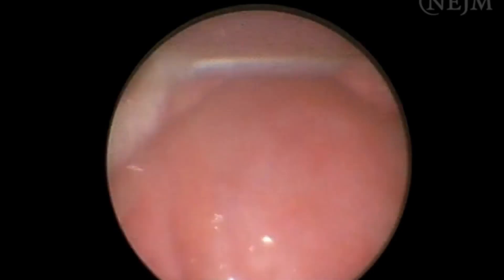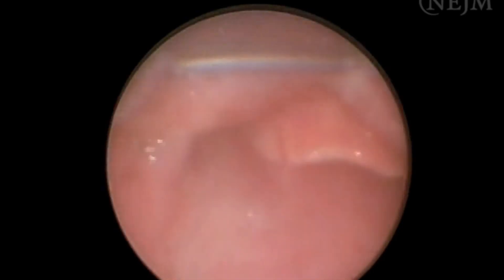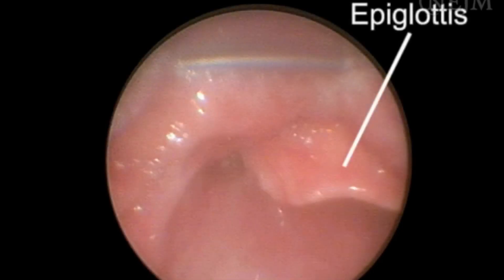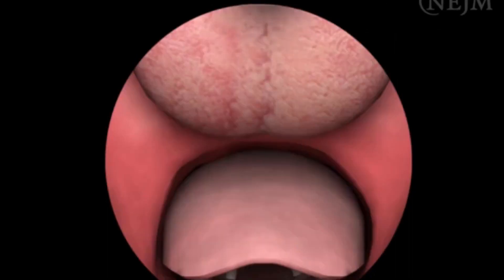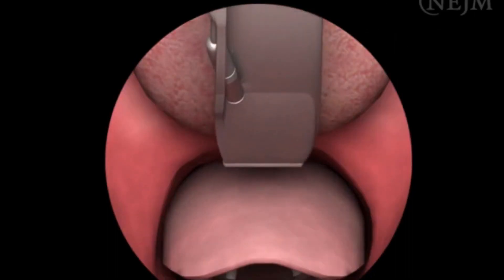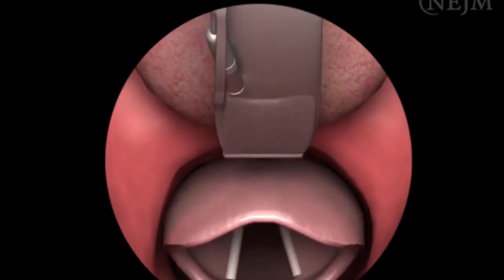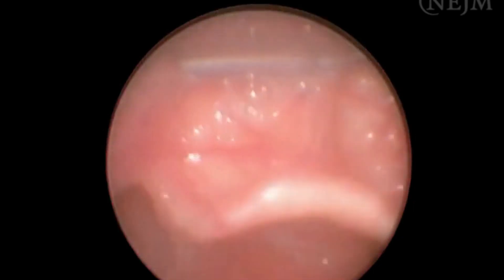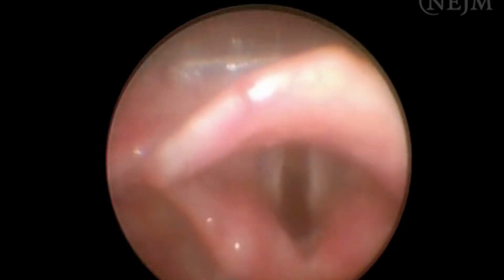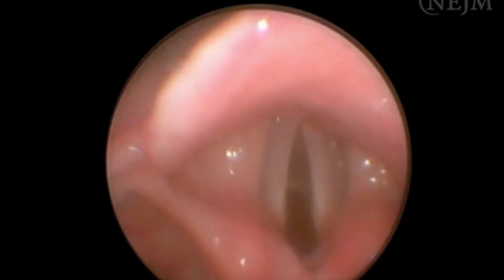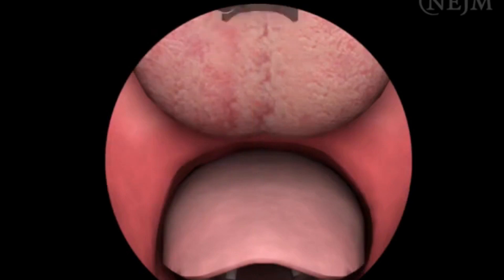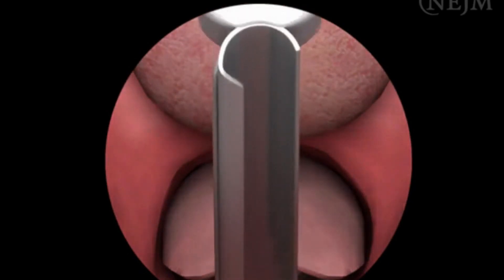Visualize the epiglottis. The ideal placement of the laryngoscope blade depends on whether a curved or straight blade is used. Place the tip of the curved blade into the vallecula, between the base of the tongue and the epiglottis, and lift anteriorly to expose the vocal cords. When using a straight blade, place the tip of the blade just past the epiglottis, and lift anteriorly to expose the vocal cords.